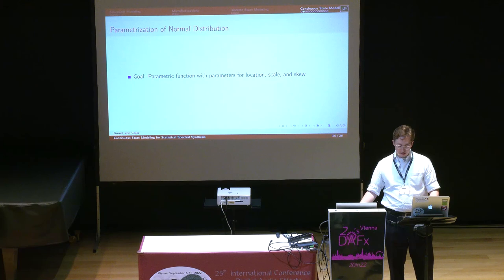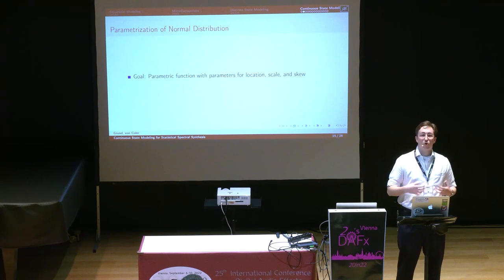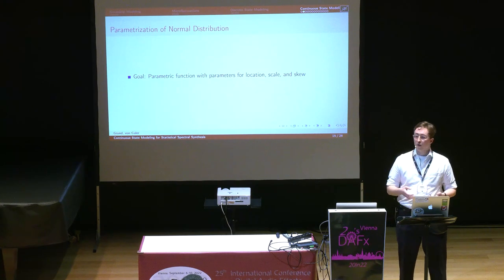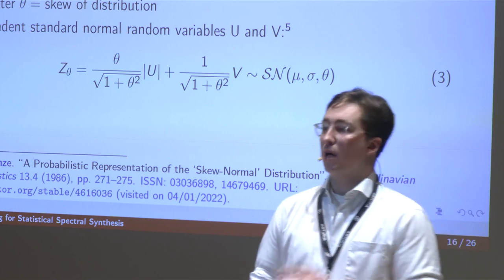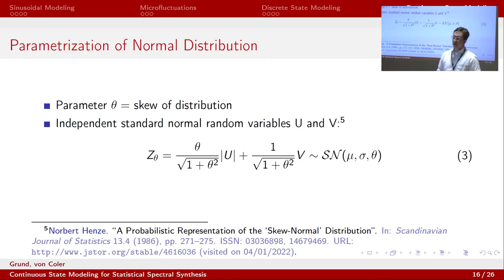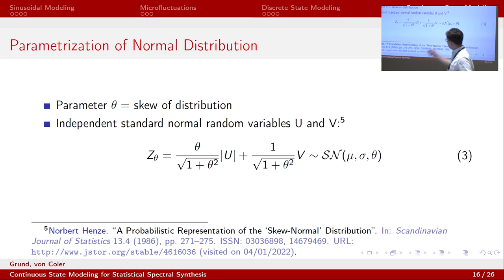Now, on to continuous-state modeling. One possible way of removing these drawbacks is to parameterize a simple function in order to draw random samples from a distribution. I'm going to introduce an approach of creating a skew normal distribution to that end. A random variable with a skew normal distribution can be produced using the approach described by Henze, using two independent standard normal random variables u and v to produce a random variable z of theta, which has the skew normal distribution with theta being the skew parameter. What's great about this is that for theta equals 0, this defaults to a regular standard normal distribution — you can see it by putting in theta equals 0, leaving z of theta equals v, which is a standard normal random variable.